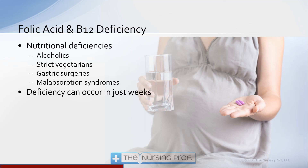When we're looking at iron deficiency and B12 and folic acid deficiency, we're talking about patients who have primarily nutritional deficits. A deficiency can occur in just weeks, so even if you've gone on a strict vegetarian diet for a short period of time, you want to make sure you're still taking a multivitamin or getting these vitamins and iron through the diet in some other way.